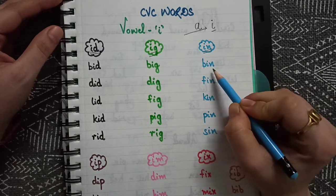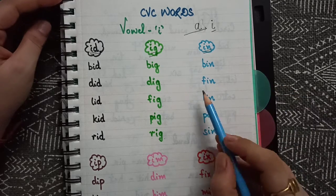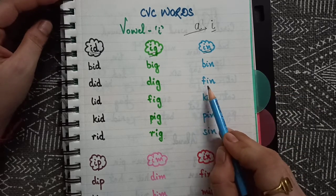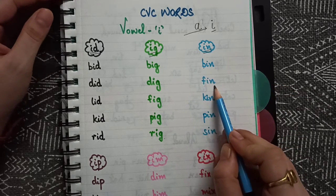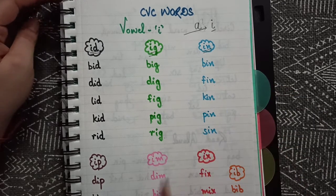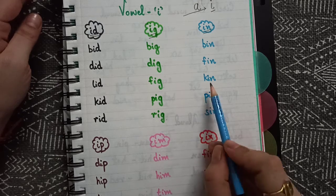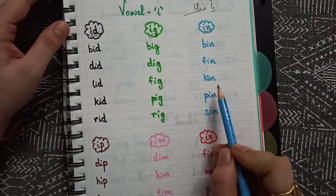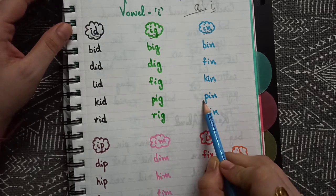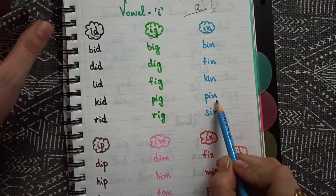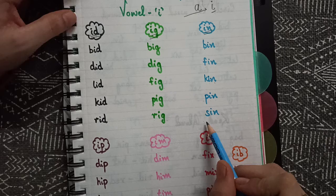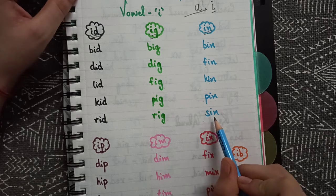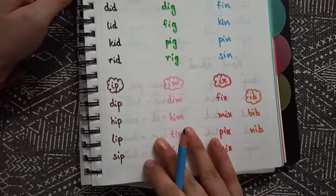So: B-I-N, bin; S-I-N... fin; K-I-N, kin; P-I-N, pin; S-I-N, sin. These are the -in family words with the short I sound.